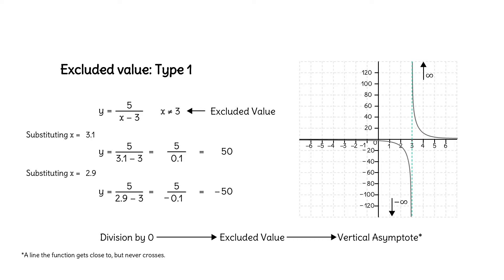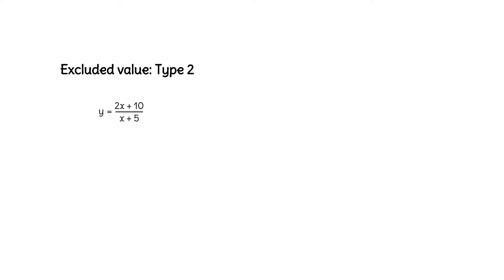So what's the other type? This rational function will demonstrate it. Can you think of a value for x that might be excluded? What value of x would make x plus 5 equal 0? Negative 5.